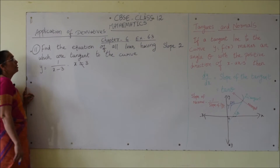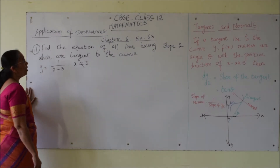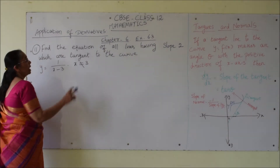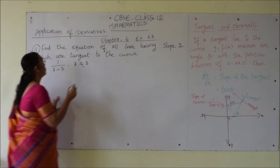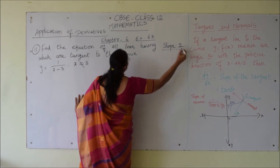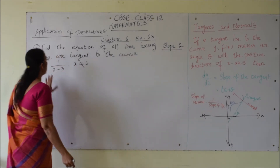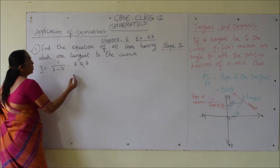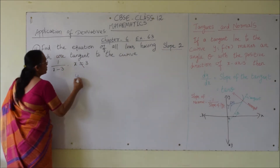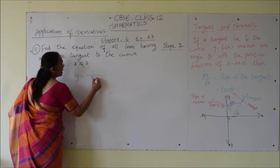Problem number 11: find the equation of all lines having slope 2 which are tangent to the curve y equals 1 over x minus 3.